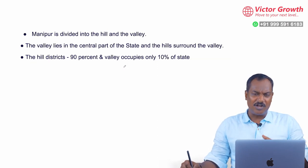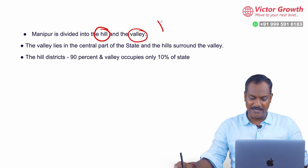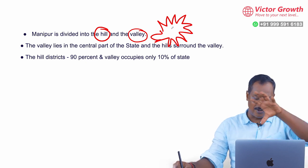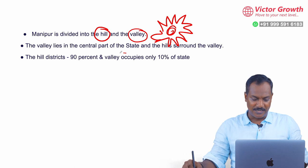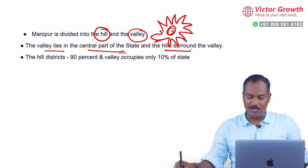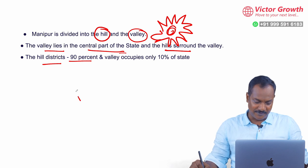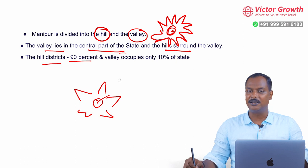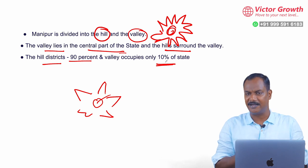If you look at the geography of Manipur, it is basically divided into a hilly area and a valley area. It is surrounded by hills and in the center you have a valley or plain. This is the topography of Manipur. 90% of the geography is hilly region and in the center you have a valley which is just 10%. This is what is at the center of the controversy and the riots happening in Manipur.